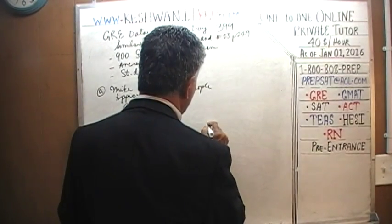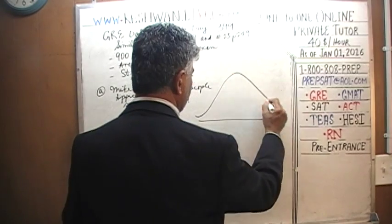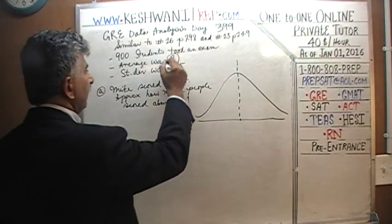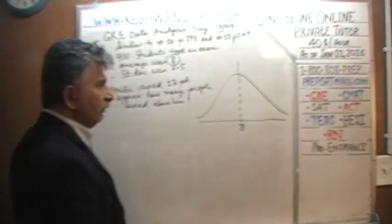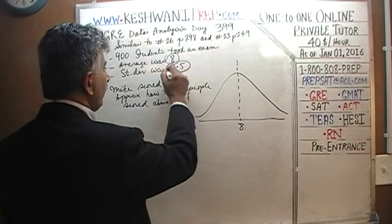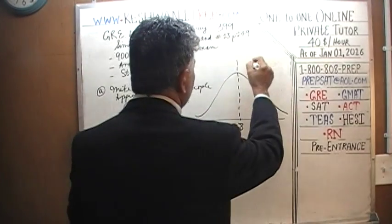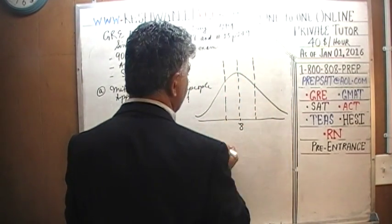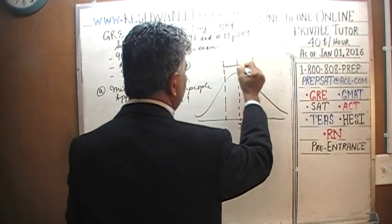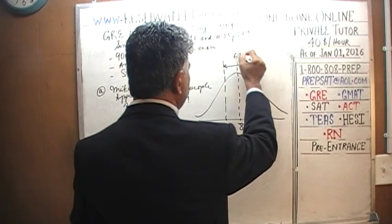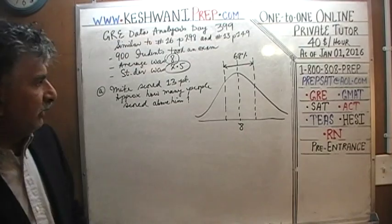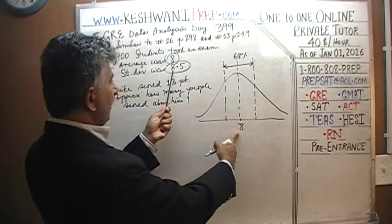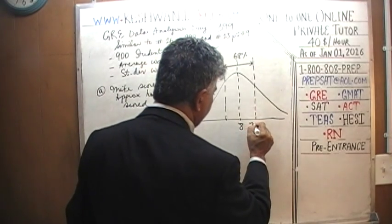It's a normal distribution. The mean is 8. The standard deviation is 2.5. One standard deviation to the right of the mean is 8 + 2.5 = 10.5, and one standard deviation to the left is 8 − 2.5 = 5.5. We know that 68% of people will score within this range.